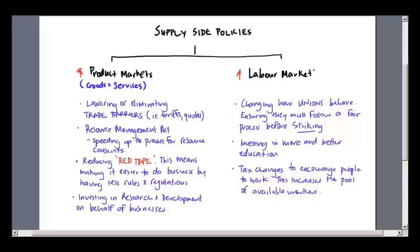In terms of the product markets, what are the supply-side policies that impact? I've identified about four here. The first is the lowering or eliminating of trade barriers — getting rid of tariffs and quotas. If tariffs are removed on imported goods or materials, then materials coming in from overseas that go into the production process will be cheaper because those taxes have been removed. That flows into the production process, making the cost of production cheaper and increasing profit.